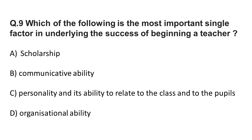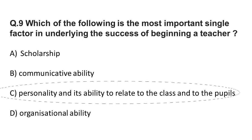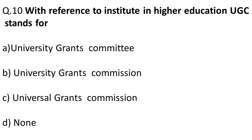Question nine: Which of the following is the most important single factor underlying the success of a beginning teacher? The correct answer is personality and its ability to relate to the class and to the purpose.